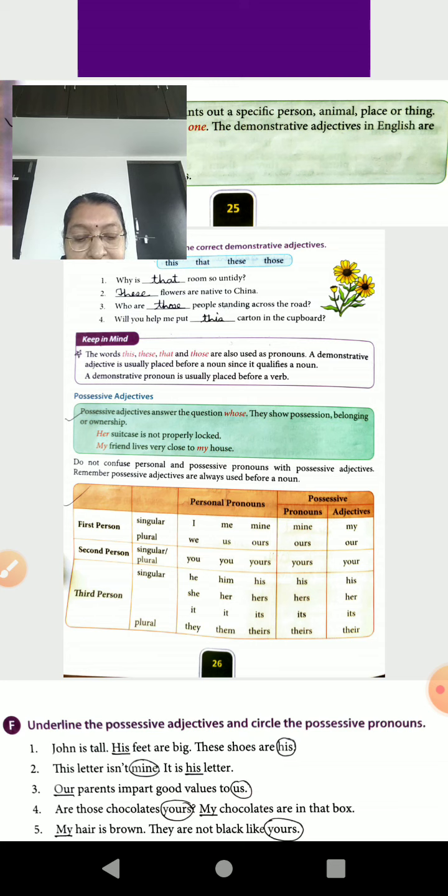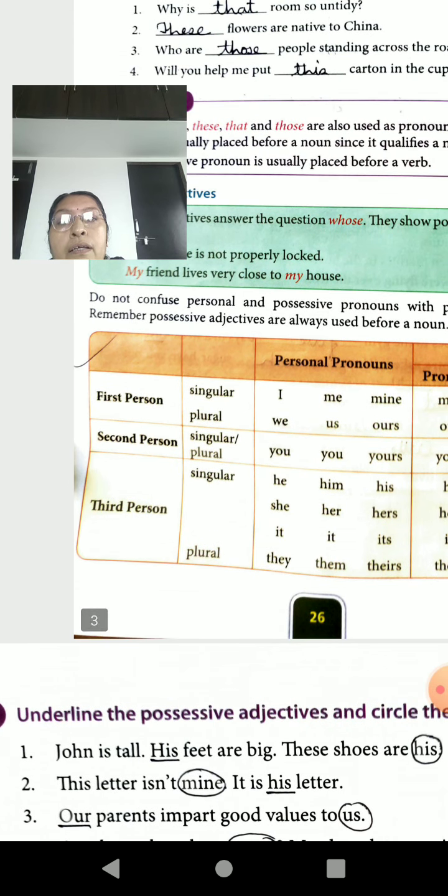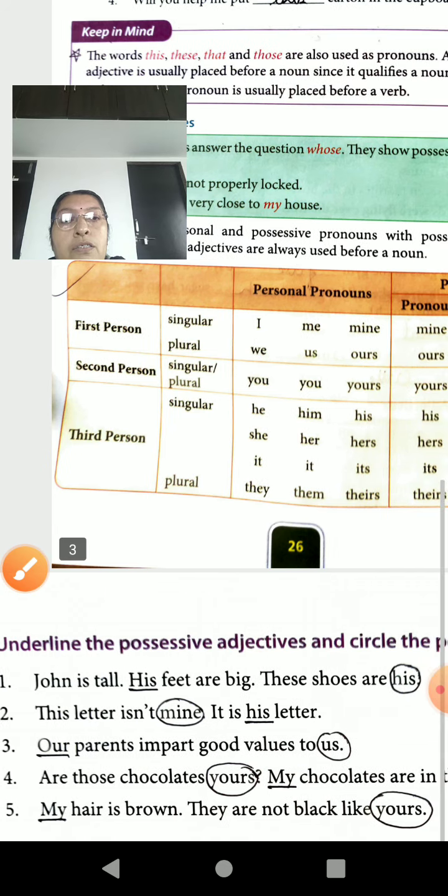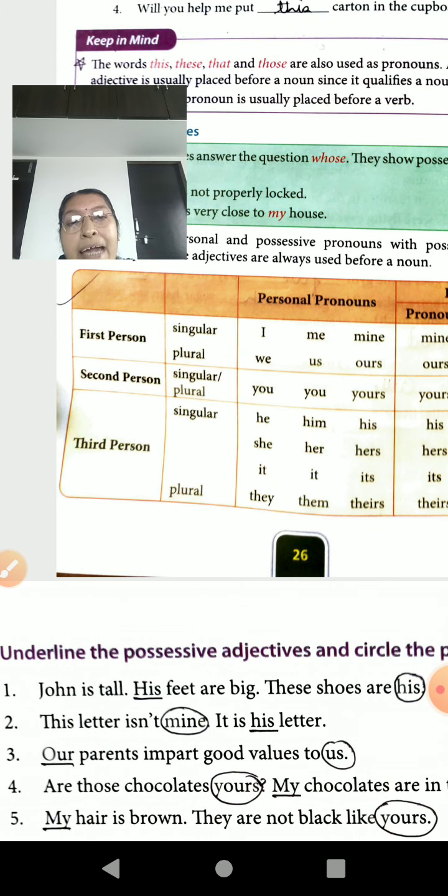Underline the possessive adjectives and circle the possessive pronouns. I already sent the PDF, you write down but I explain here. John is tall. His feet are big. So, here underline 'his' and here circle 'his'. Understand? Okay. So, this letter isn't mine. Mine is a pronoun, and his letter underline possessive adjectives.